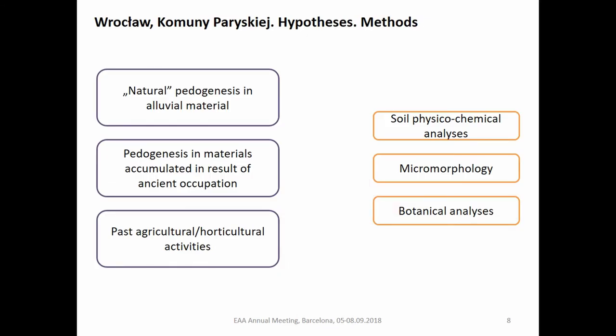We wanted to know how this formed, so we considered three main hypotheses. First, natural pedogenesis in alluvial material — we're very close to a confluence of two rivers there. Second, pedogenesis in materials accumulated as a result of ancient occupation, something noted as an important factor for dark earth formation in many European cities. Third, past agricultural and horticultural activities. We used bulk analysis, micromorphology, and botanical analysis — unfortunately only two micromorphological samples due to financial constraints. This was all preceded by a detailed survey in archives and on old maps.